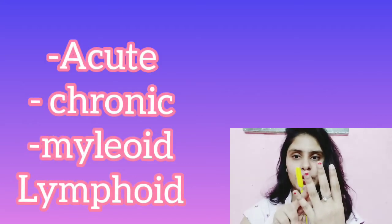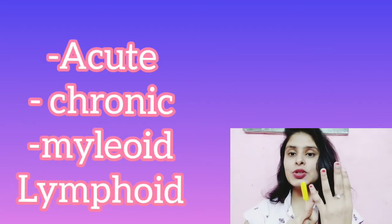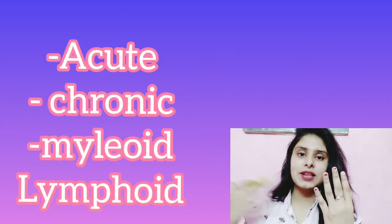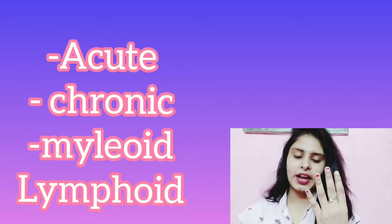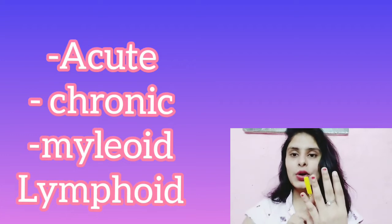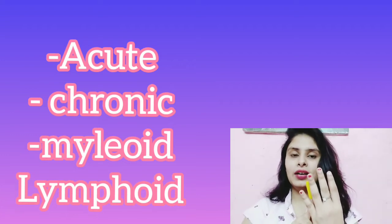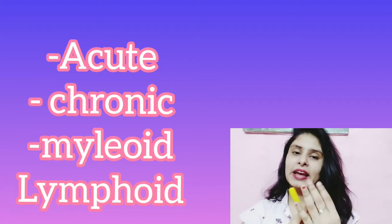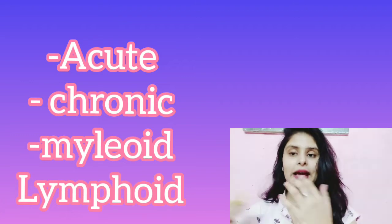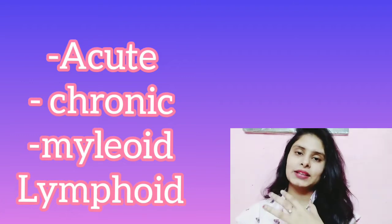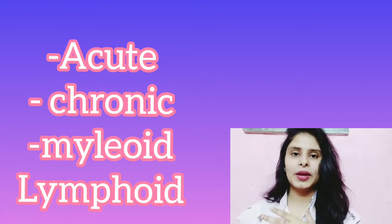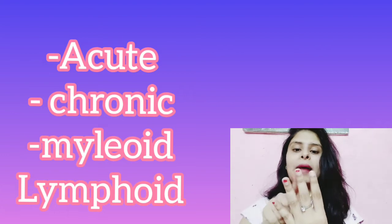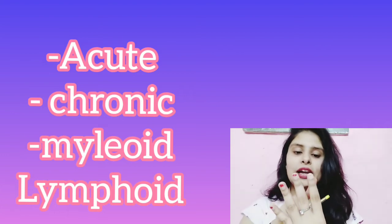Leukemia has four types, which we divide first into two categories and then into two more. The first division is acute and chronic. In acute leukemia, symptoms appear very quickly, while in chronic leukemia the symptoms appear very slowly over time. The second division is myeloid and lymphoid.